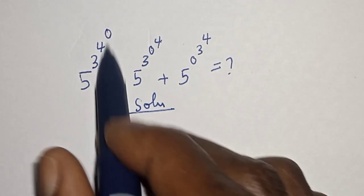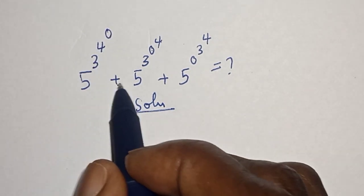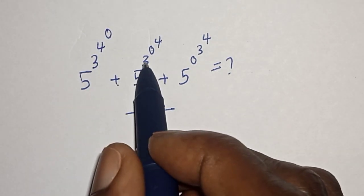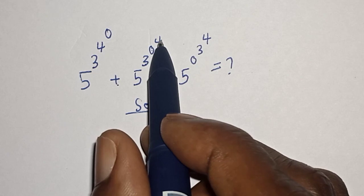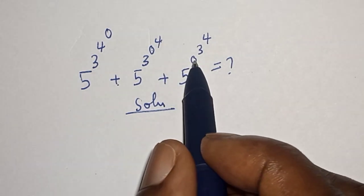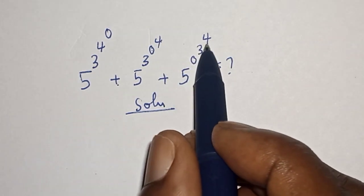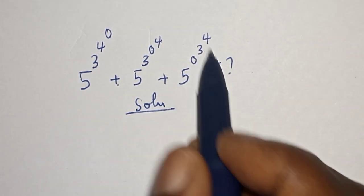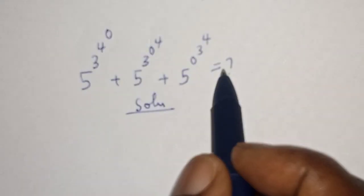Solution: five raised to power three raised to power four raised to power zero, plus five raised to power three raised to power zero raised to power four, plus five raised to power zero raised to power three raised to power four. This is equal to what?